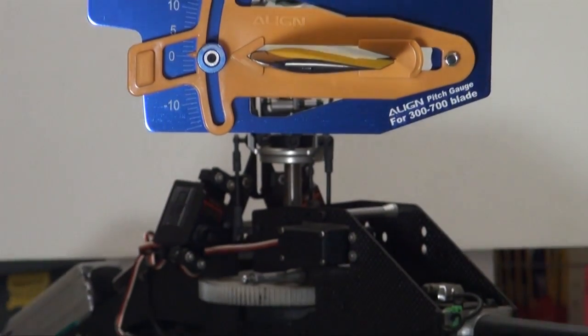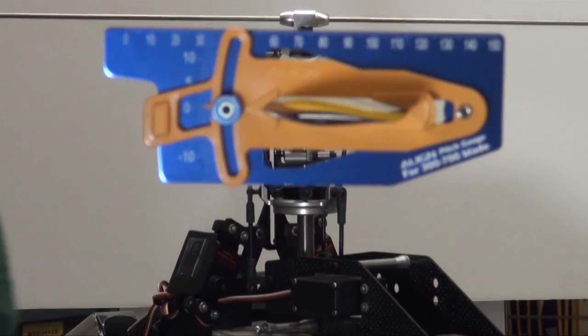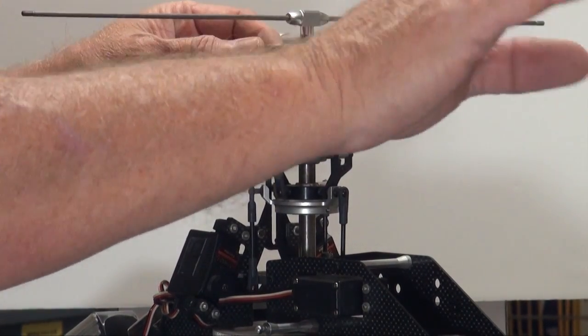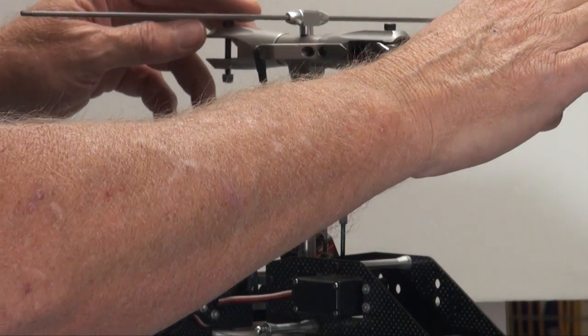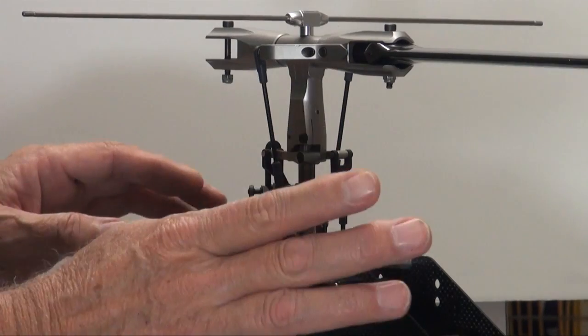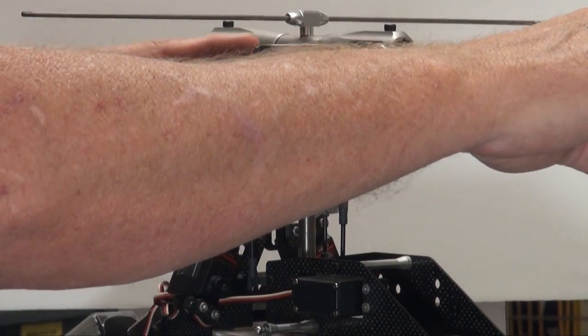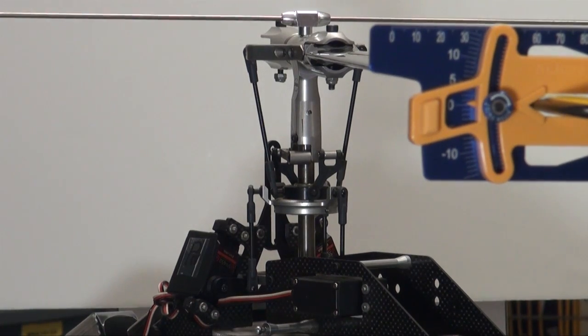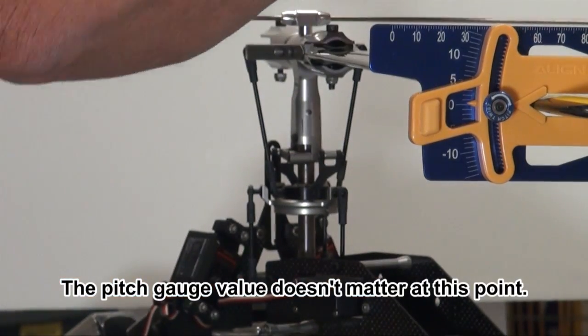We're going to look at the swash plate. And you can see that this pitch arm is controlling the blade that has the pitch gauge on it. So we're going to pick out the servo that is closest to being neutral, the one that you've adjusted so it's perfectly level. And let's just say, for example, it's this servo. This one. We're going to line up the ball on the inner swash plate with that ball. And then you're going to adjust the pitch gauge so the top surface lines up with the fly bar.